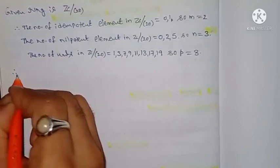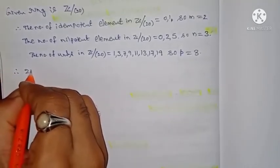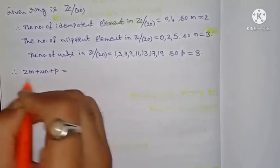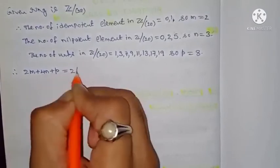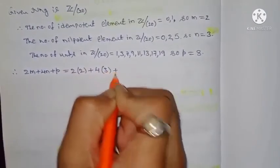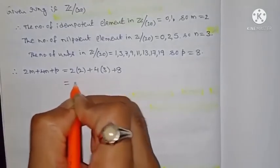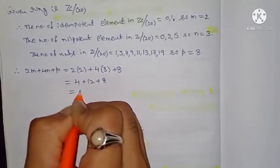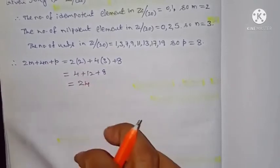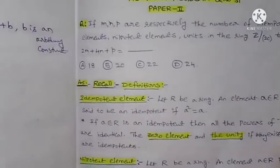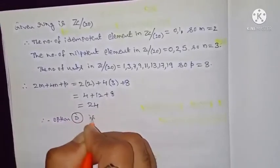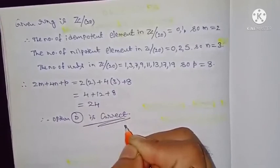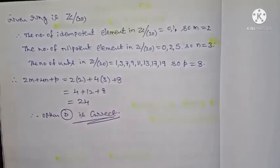Now substituting the values into the given expression: 2m plus 4n plus p equals 2 times 2 plus 4 times 3 plus 8, which equals 4 plus 12 plus 8, which equals 24. Therefore option (d) is correct. I hope you like this video — please share and subscribe. Thanks for watching.